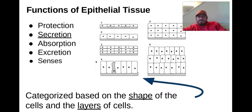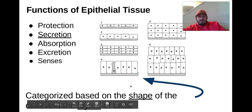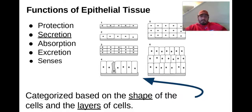There are six major types of epithelial tissue. The key thing to take away is that we categorize these types based on the shape and on the layers of the cells — shape and layers.